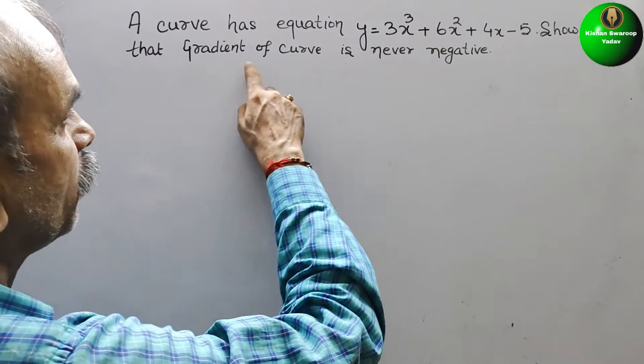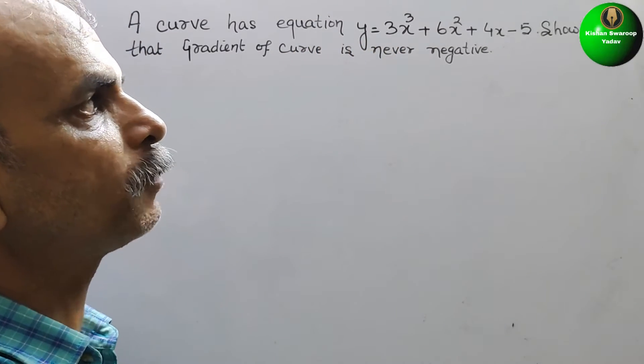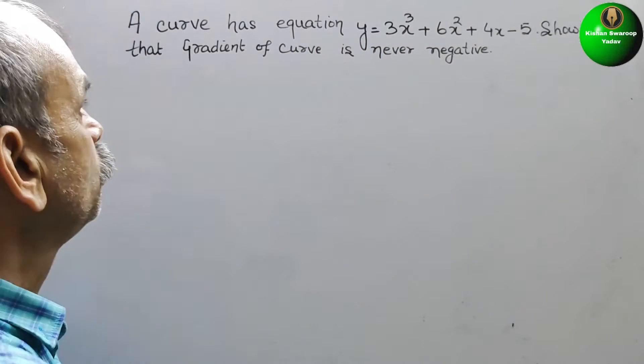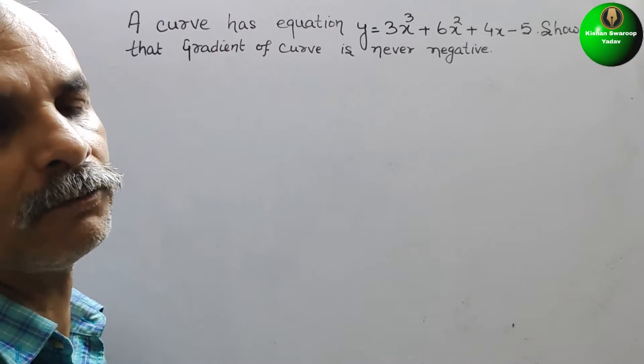Your question is: A curve has equation y = 3x³ + 6x² + 4x - 5. Show that the gradient of curve is never negative.